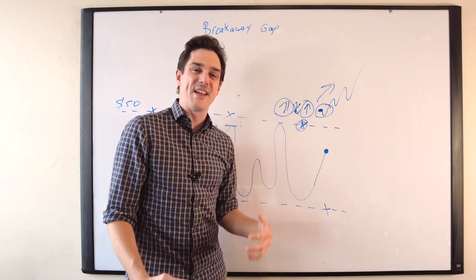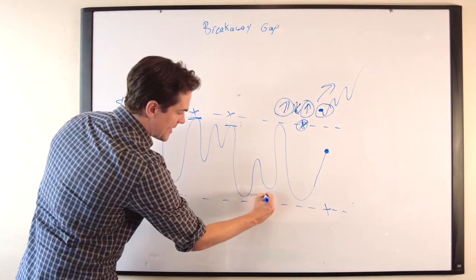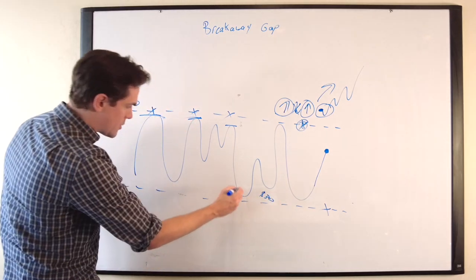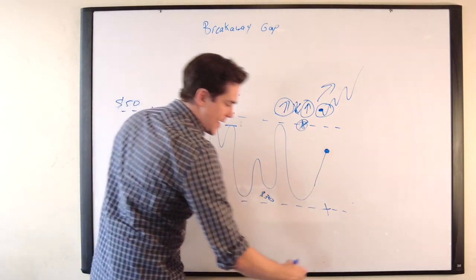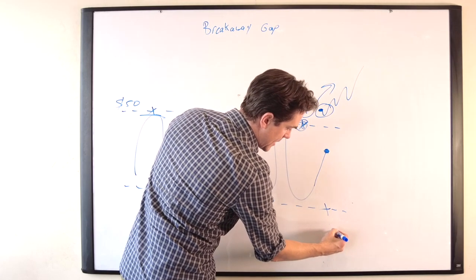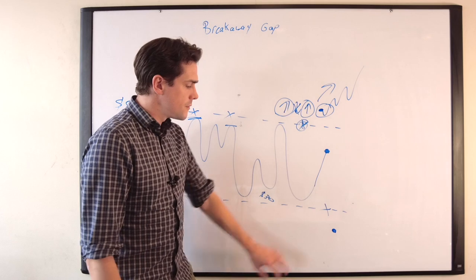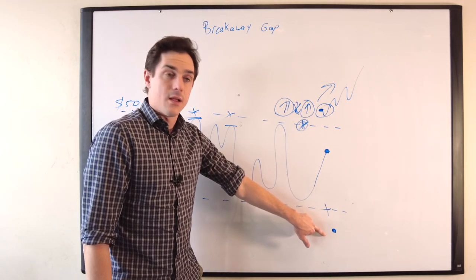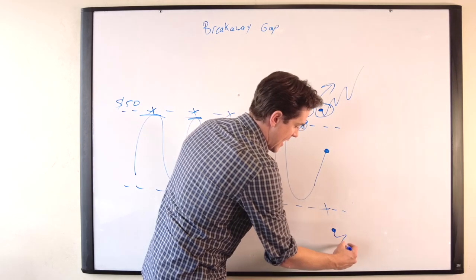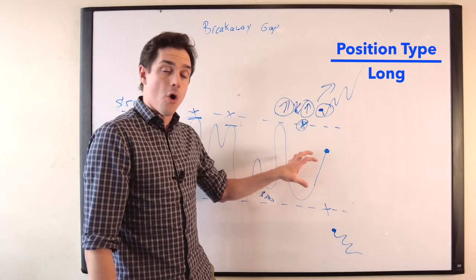What about a breakaway gap to the downside? Well, guess what? It's going to be the exact same thing as far as supply and demand goes, but in the opposite direction. So here's my big support level - maybe that support level has been $30. It's been constantly holding. Market closes somewhere in the range, and the next day the market gaps below it. What's going to happen? Same thing, most likely. This is going to lead to a gap and go to the downside.